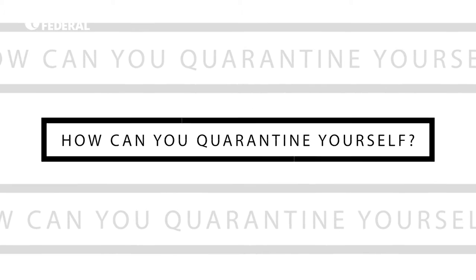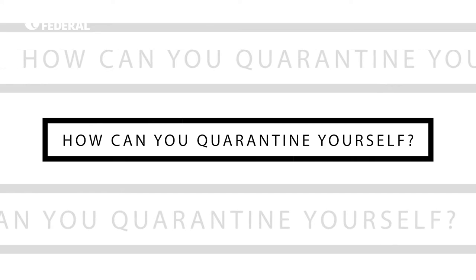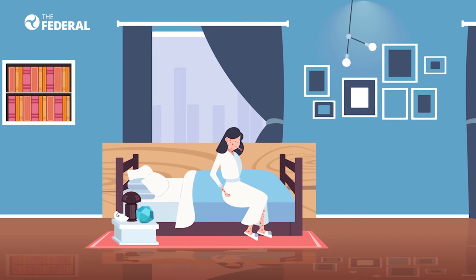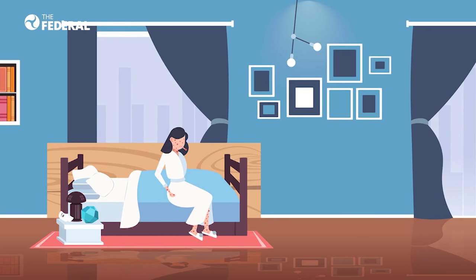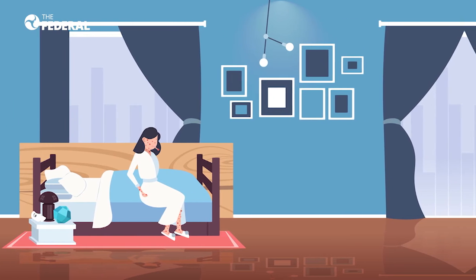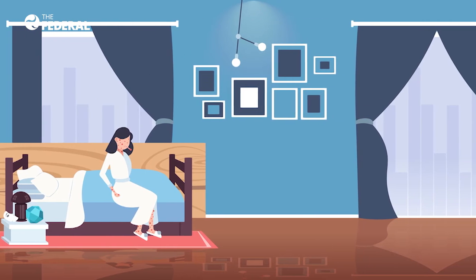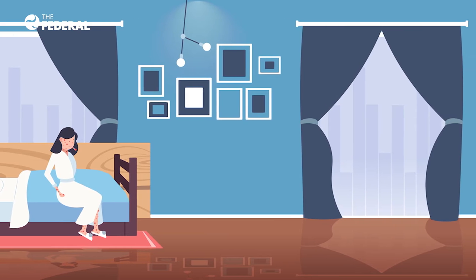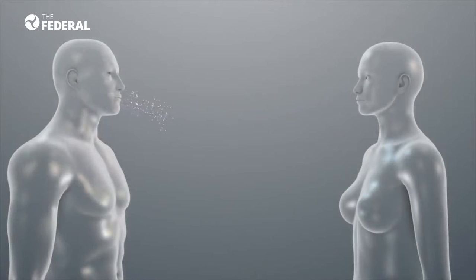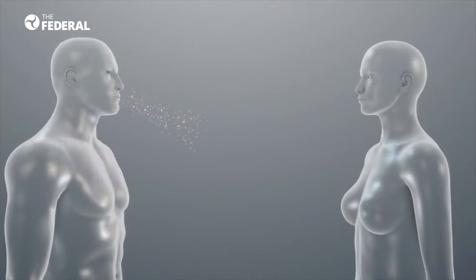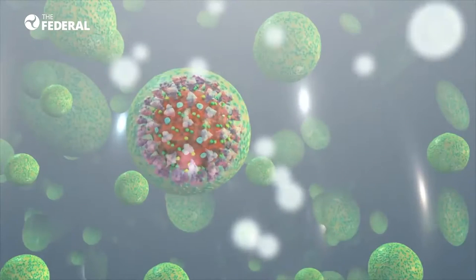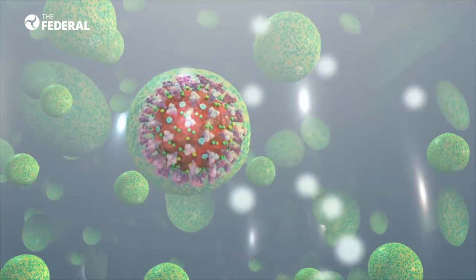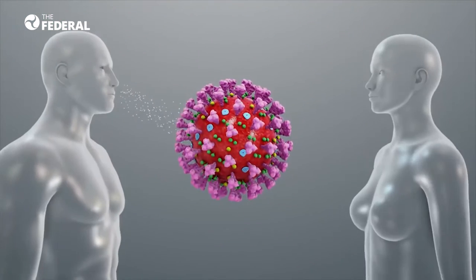So how can you quarantine yourself? One should be in a well-ventilated single room with an attached toilet to minimize contact with other rooms in the house. If at all you are sharing the room with another person, it is advisable to maintain a distance of at least 1 meter between the two.